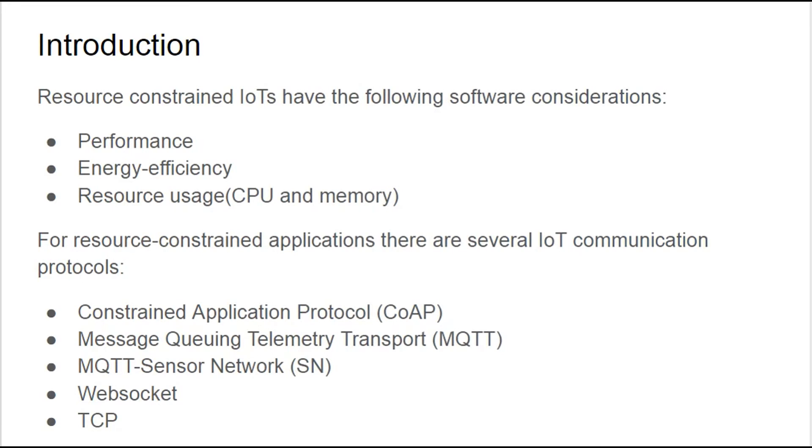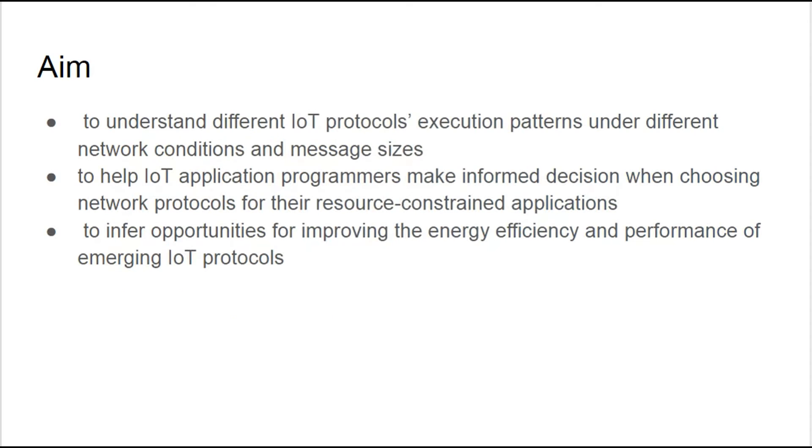This paper aims to provide certain guidelines to programmers when they go about choosing various IoT protocols for setting up network communication. The protocols we are going to be considering are Constrained Application Protocol, Message Queuing Telemetry Protocol, MQTT Sensor Network, WebSocket, and TCP. We aim to analyze how different protocols behave under different network conditions and with different message sizes. IoT designers also need to be aware of how to go about choosing protocols for their applications. And our third aim is to look for areas of improvement in performance and energy efficiency in designing newer emerging protocols.